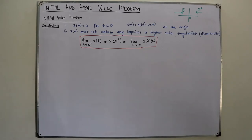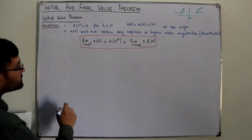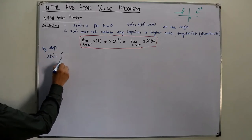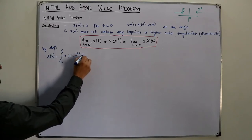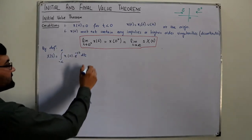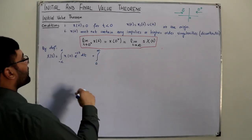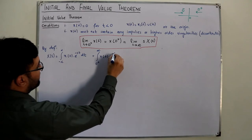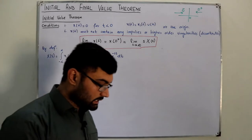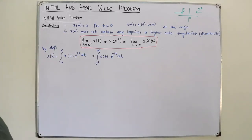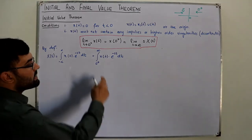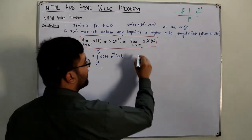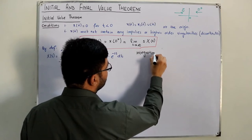Now if you want to prove it — how do we get this? By definition, the Laplace transform X(s) is given as the integral of x(t) exponential of negative st dt. We already know this is 0 for the negative side — this is the unilateral Laplace transform. So I write it as 0+ to infinity of x(t) exponential of negative st with respect to t.